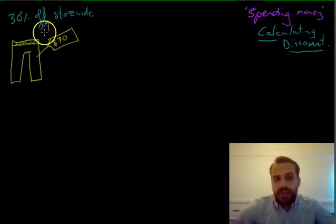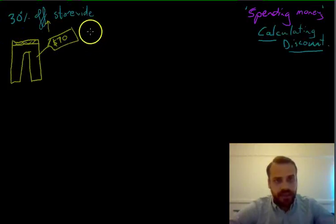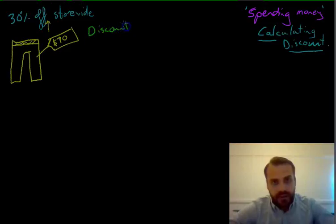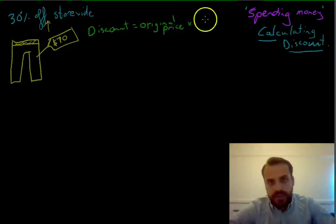Now some of you can probably do this in your head depending on how you feel about maths. But I'm going to show you the formal way to do it and it's important that you've got this formula handy. So our formula is going to be discount is equal to our original price times percentage discount.